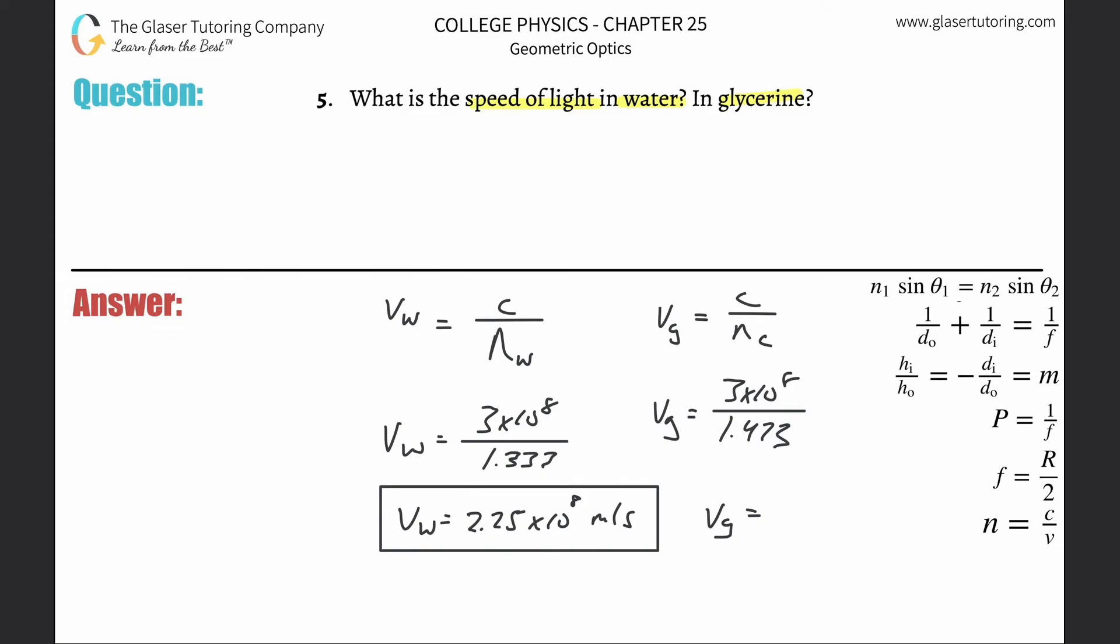And then here we go, so three times ten to the eight divided by one point four seven three. And now we get about two point oh four, two point oh four times ten to the eight meters per second. And that's that, guys.